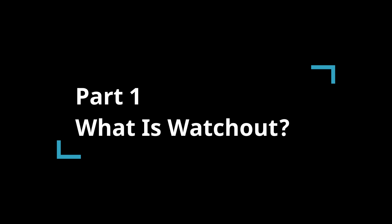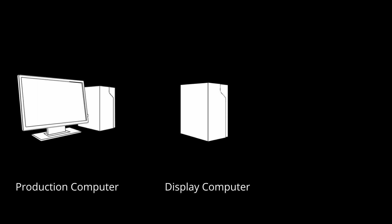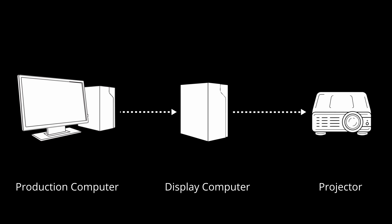In a basic setup, Watchout is comprised of two computers. One is called the production computer and one is called the display computer. The production computer is where you program the software to achieve a desired outcome, and that computer tells the display machine which media to play and what display it appears on.